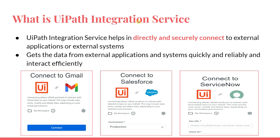Integration Service gets data from external applications and systems quickly and reliably, and it can interact efficiently — any kind of actions you would like to perform can be done. It will be clearer as we see demos. From this, you have understood that Integration Service is used to connect UiPath with an external application directly and securely, so you can get the required data and communicate with the external application in a reliable way.